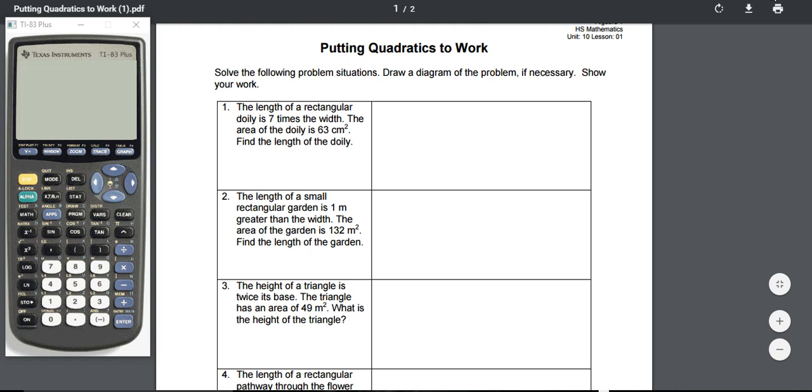I am looking at putting quadratics to work. We're going to solve the following problem situations and draw a diagram showing whatever work we need to. I have the length of a rectangular doily is seven times the width. The area of the doily is 63 centimeters squared. Find the length of the doily.